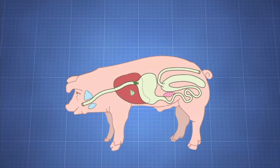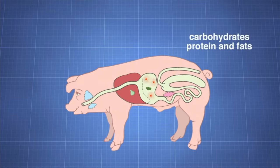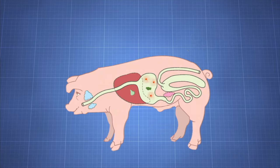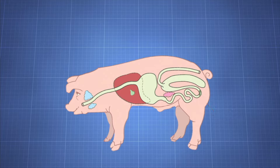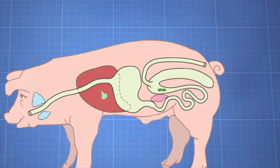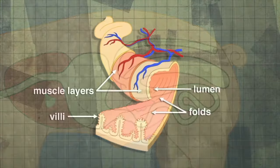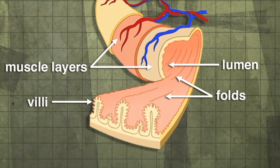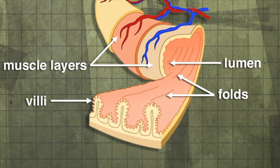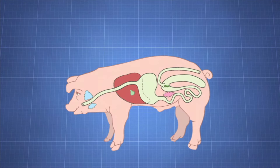Enzymes in the stomach begin to break food components such as carbohydrates, protein, and fats into smaller molecules. A few of these molecules are absorbed from the stomach into the bloodstream, but most pass to the small intestine where further breakdown takes place. The large surface area provided by villi in the digestive tract helps to absorb nutrients into the blood and lymph. Villi are small finger-like projections on the inner wall of the intestinal wall.